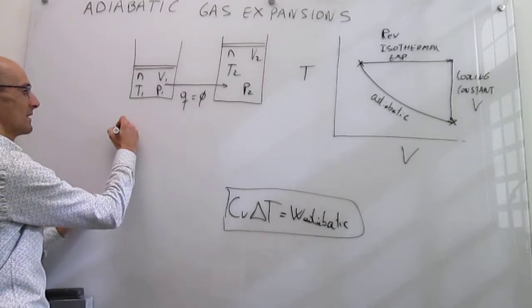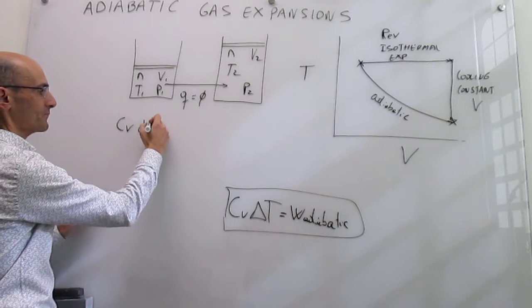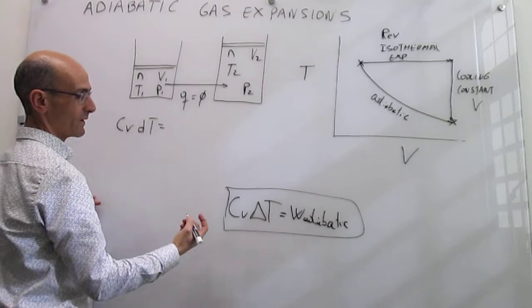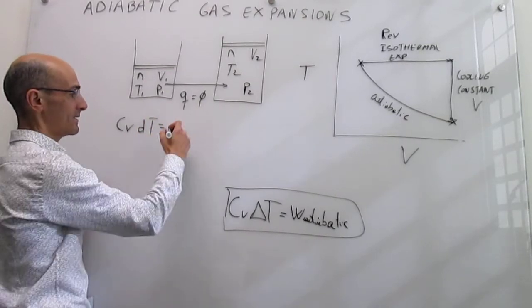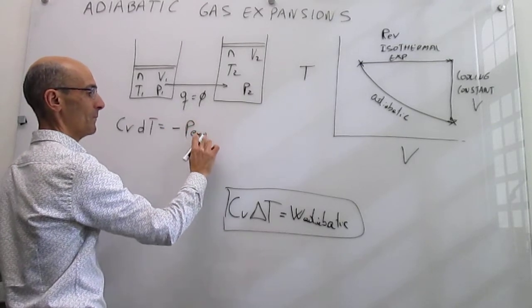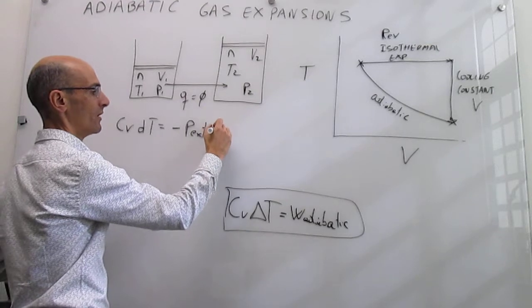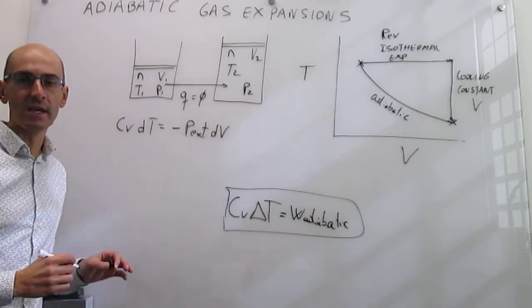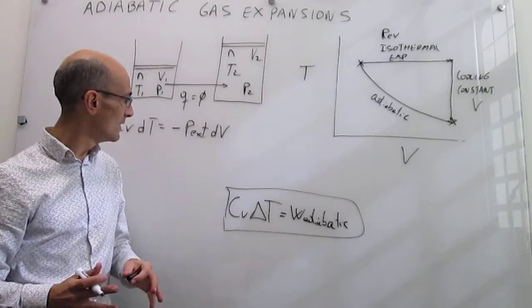So we can say that cv differential of T is going to be equal to the differential of work adiabatic, but this is expansion, so the root definition for work in any expansion is just the minus external pressure differential of V.